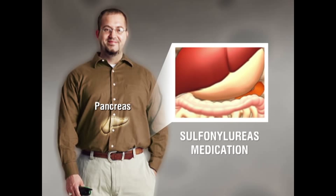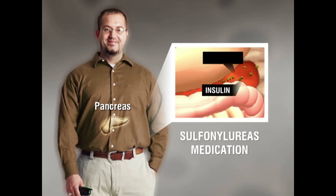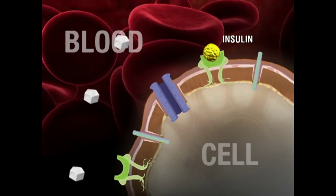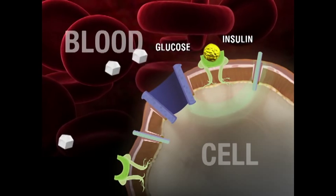Sulfonylureas medication increases your body's production of insulin before you eat. Your pancreas naturally produces insulin, which sends signals to your cells to absorb glucose from the food.